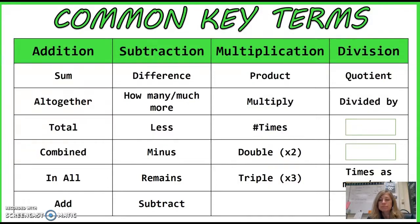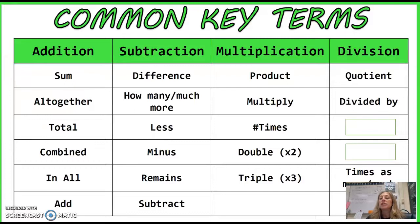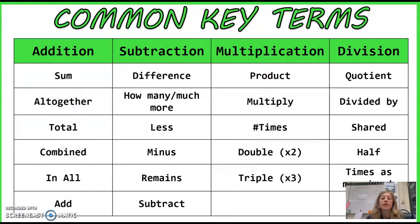Multiplication is product. I know I'm going very fast; if you need to pause or rewind, you take as much time as you need to. I'm just going through it quickly because I don't have to write it. Division can be quotient — that's a big one — divided by, or shared, or half. Half means you can divide by two or multiply by one half; it's the same thing.